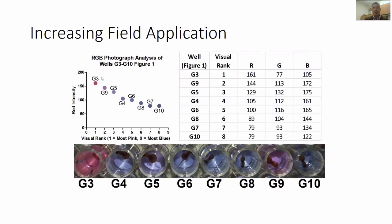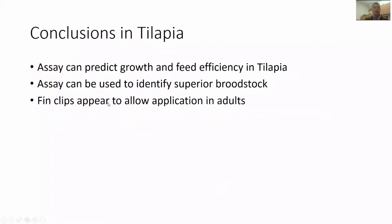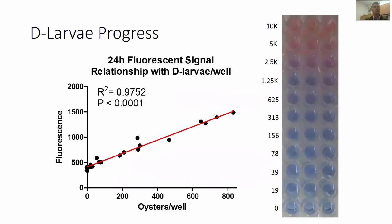To conclude our tilapia research: we have an assay that can predict growth and feed efficiency in tilapia, it can be used to identify superior brood stock, and fin clips appear to allow selection from adults. Future work will move forward with that.